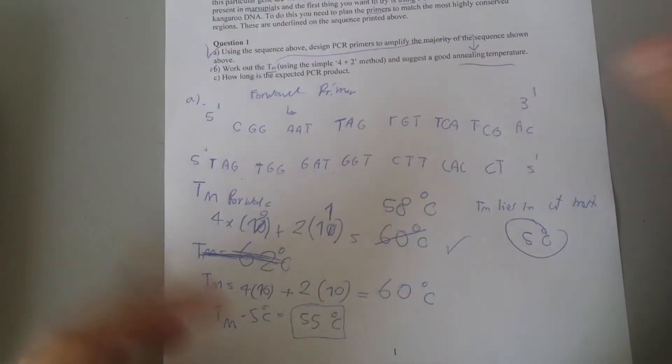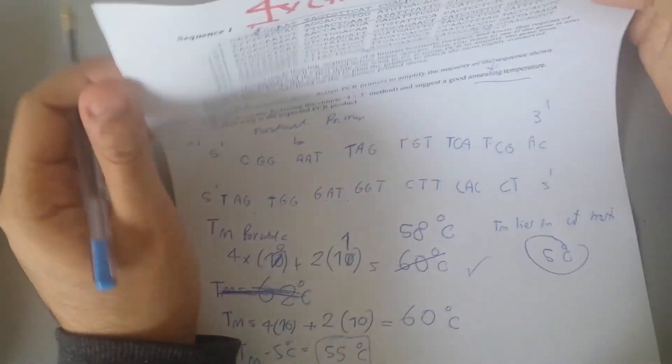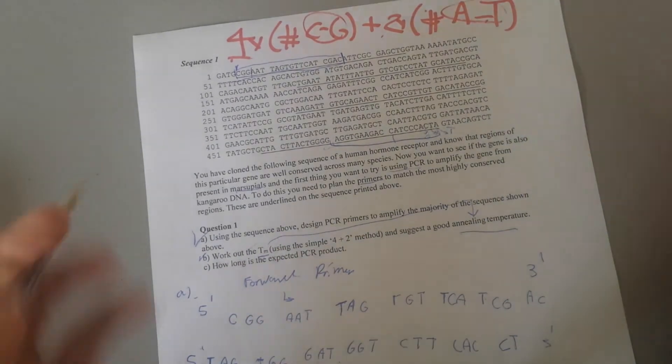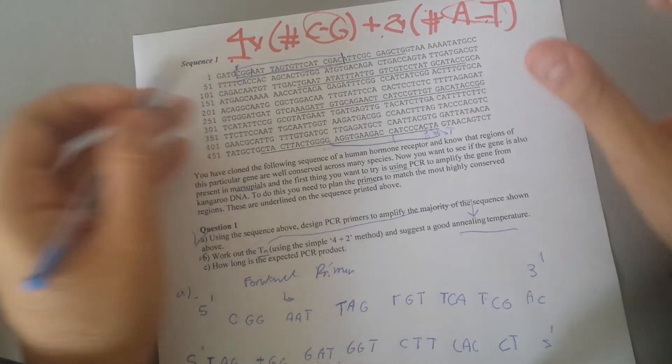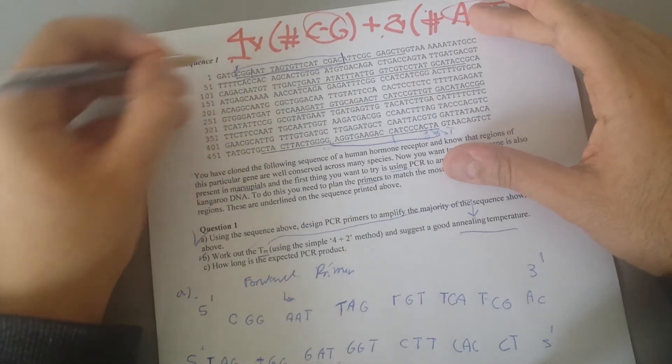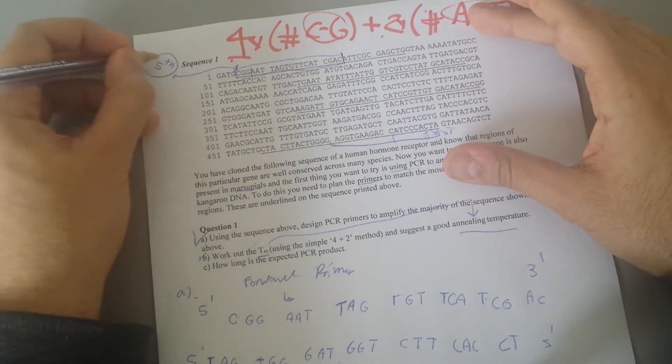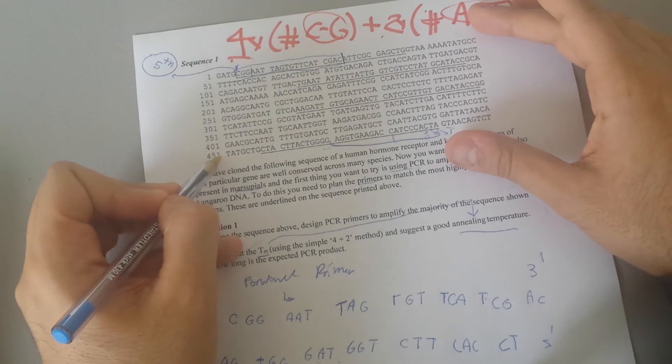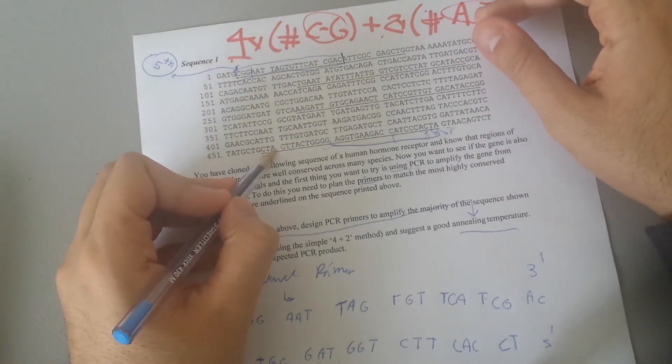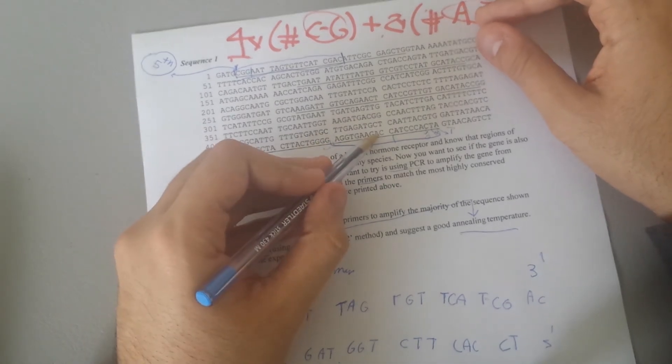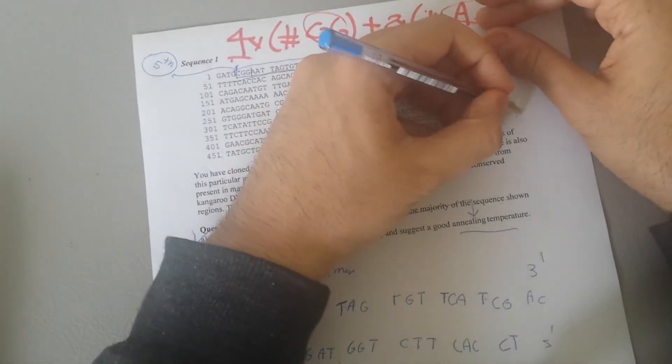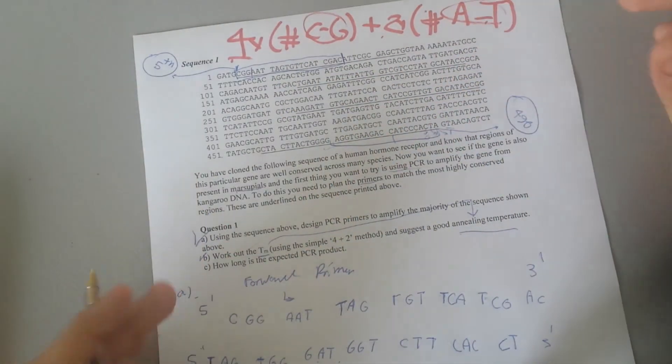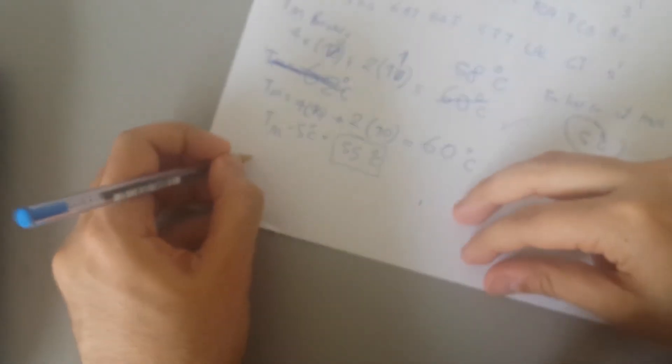The last question asks what is the expected PCR product. This is very easy. What you're going to do is first find the number of beginning nucleotide. Here is one, two, three, four, five, so it starts at the fifth nucleotide. Where do we end? Here is 460, 470, 480, 490, so we end at 490.